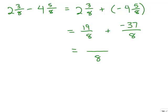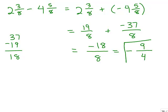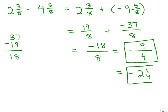So my numerators are 19 plus negative 37. I'm adding a positive and a negative and I've got more negatives, so my answer is going to be negative. I just do 37 minus 19 — with different signs we subtract — that gives 18. So that's negative 18 eighths, and that can be reduced because they're both even. Dividing top and bottom by 2, I get negative 9 fourths. Written as a mixed number, that's negative 2 and 1 fourth. Both forms are correct.